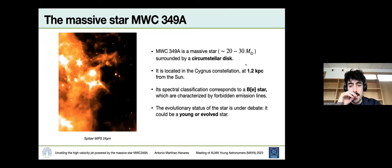A bit of context first about the system. The star is a massive star, mass between 20 and 30 solar masses, surrounded by a circumstellar disk, which is detected also in the infrared. It's located at 1.2 kiloparsec from the sun. The spectral classification is of a BE star. And the evolutionary status is under high debate. There are claims of it being a young star, another a supergiant evolved star.